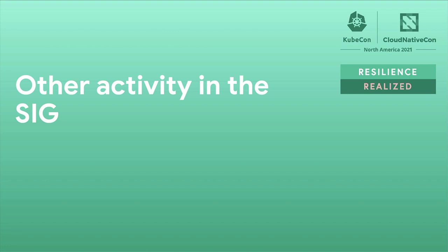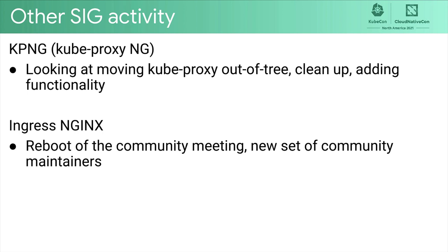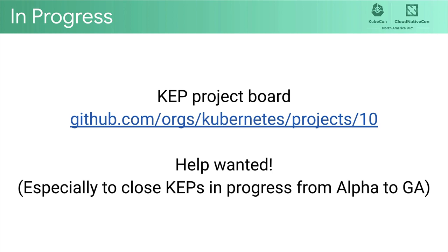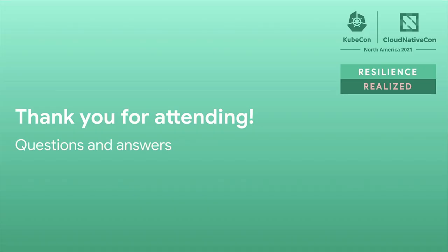Finally, let's talk about some of the other activity in the SIG. There is a working group looking at modernizing the kube-proxy implementation — this is kube-proxy next generation — looking at moving kube-proxy out of tree, cleaning up the code, and potential ways to add new functionality. Another large group is looking at rebooting the community around ingress-nginx, one of the largest and most commonly used ingress implementations. With a new set of community maintainers, we are hoping to carry forward feature work and support for the nginx ingress implementation. There is a lot going on in SIG Network and much help is wanted, especially to close KEPs that are in progress from alpha to GA. Thank you for attending, and now it is time for Q&A.